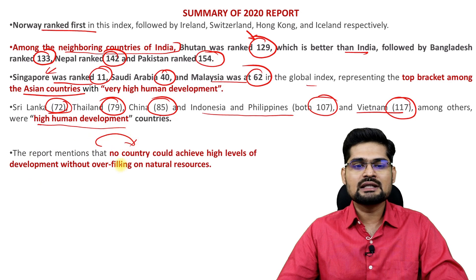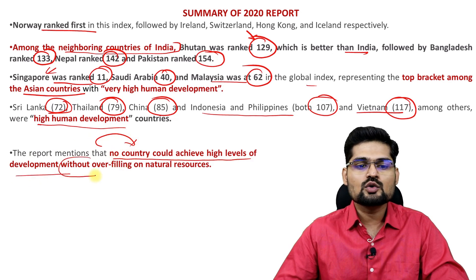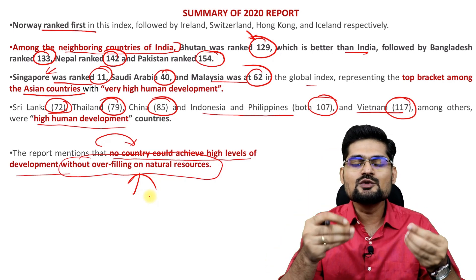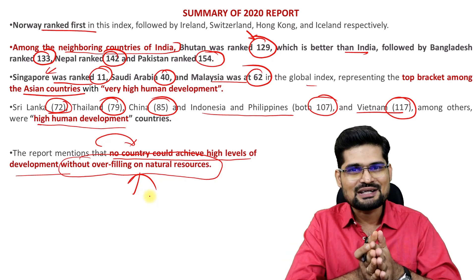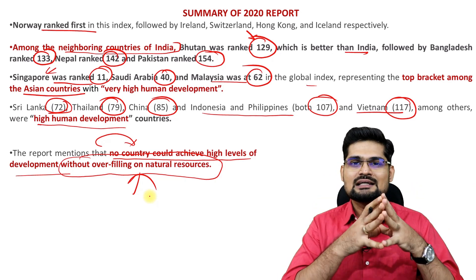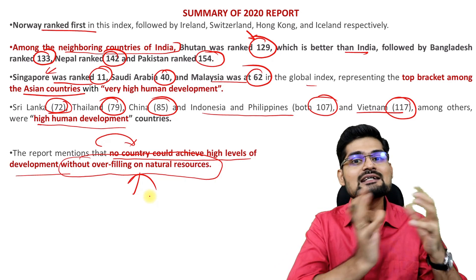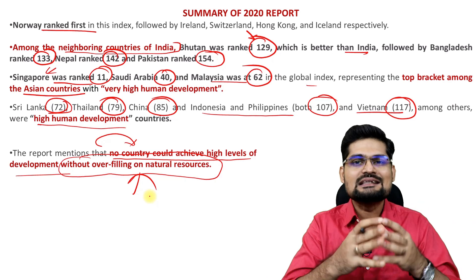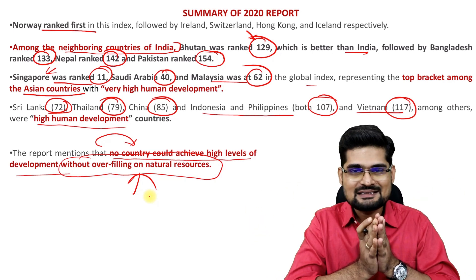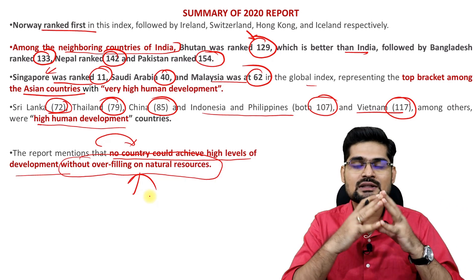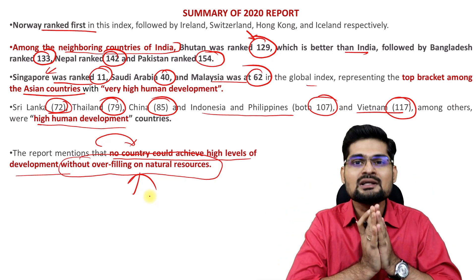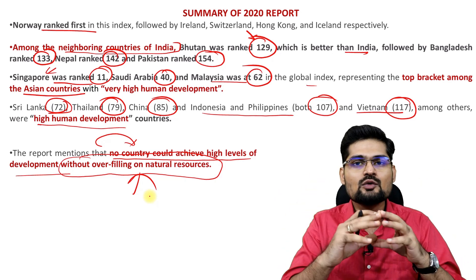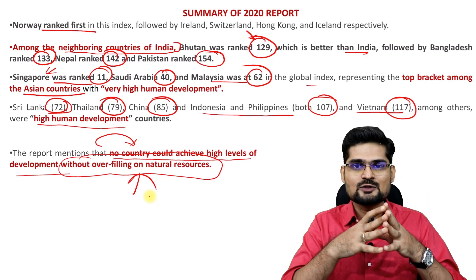The report also mentions that no country could achieve high levels of development without overfilling on natural resources. All top-ranking countries are consuming natural resources at high per capita levels. If India consumed the same levels of natural resources per capita as those top 10 countries, all natural resources would be depleted in just a few days given India's huge population. Therefore, slow and gradual — meaning sustainable development — is the course of action that countries like India must consider.